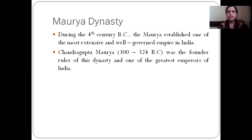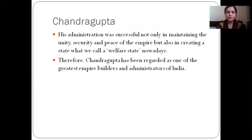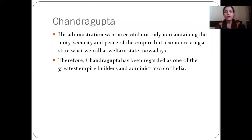During the 4th century BC, the Mauryas established one of the most extensive and well-governed empires in India. Chandragupta Maurya was the founder and ruler of this dynasty — one of the greatest emperors of India. His administration was successful not only in maintaining the unity, security and peace of the empire but also in creating a welfare state. Therefore Chandragupta has been regarded as one of the greatest empire builders and administrators of India.